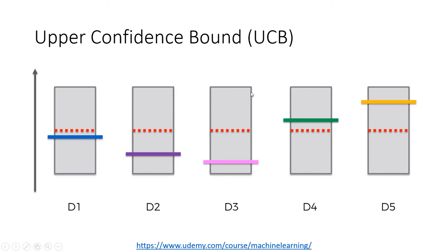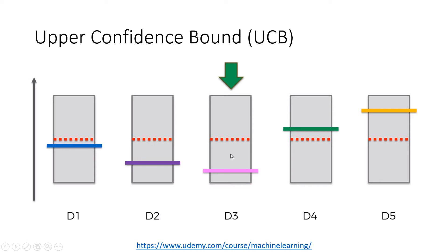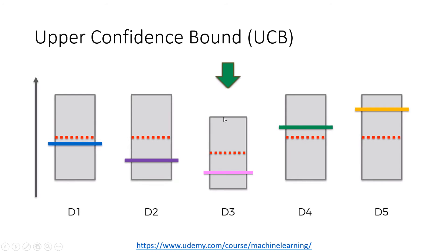This is the beginning. We are going to randomly select one of these machines to go through the first iterations. Let's say we selected this one. We are going to pull the lever of the machine, and we are either going to win or lose. In this case, we lost. So our observed mean came down, and our confidence interval decreased in size — that's based on statistics.